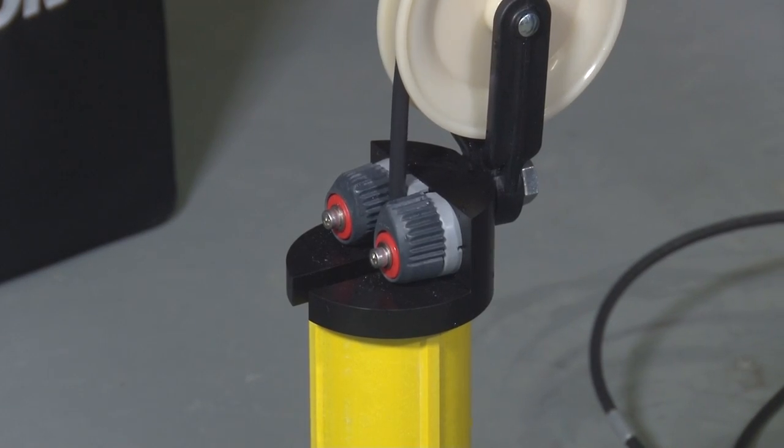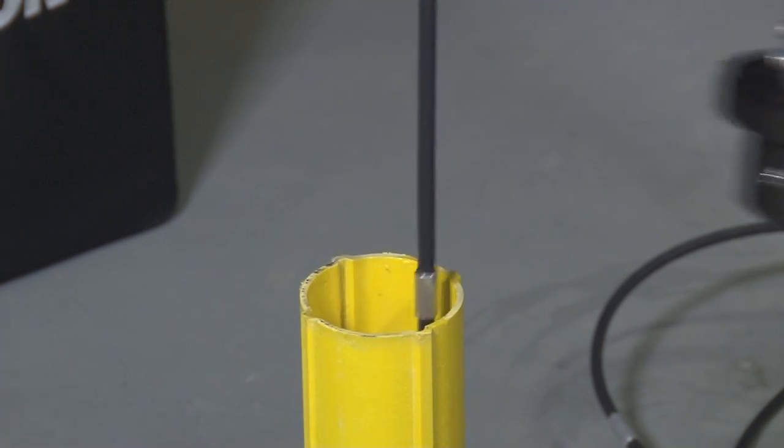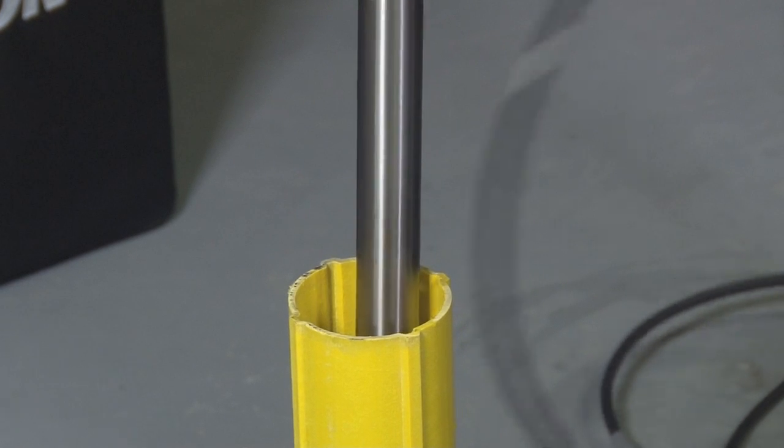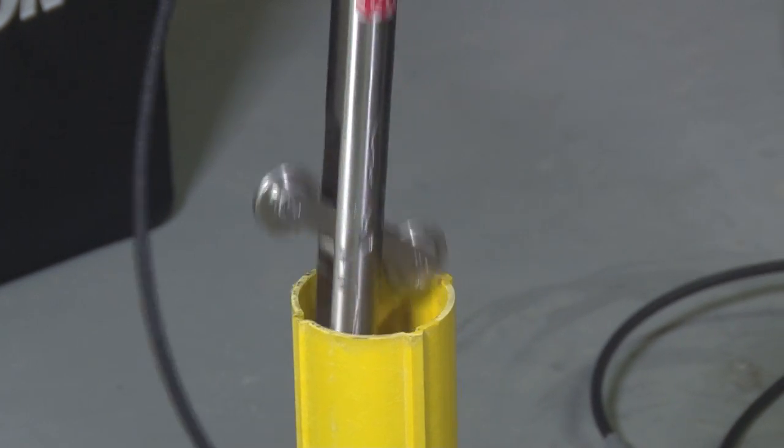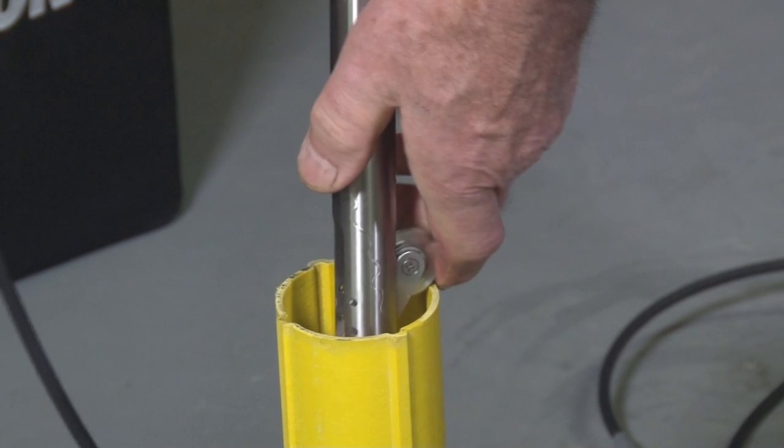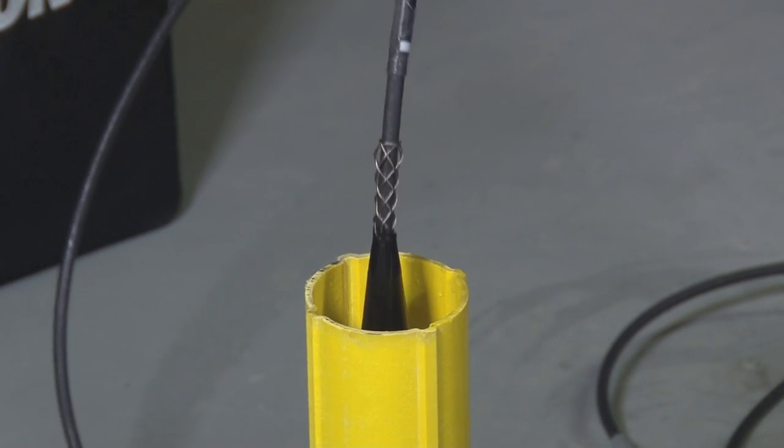When the probe is near the top of the casing, remove the pulley assembly and then remove the probe. Turn the probe 180 degrees, align with the casing grooves, and allow it to descend to the bottom of the borehole.